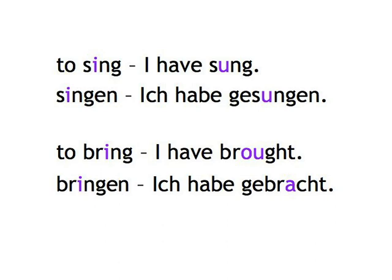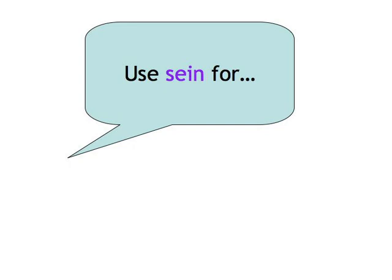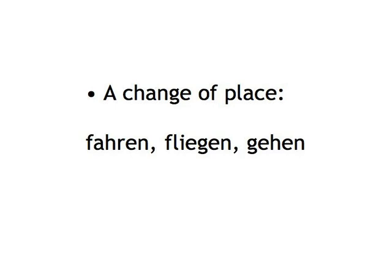As I pointed out initially, the perfect tense in German is normally formed with the auxiliary haben, like in English. So the next issue is when to use the auxiliary verb sein to form the perfect tense. The auxiliary verb sein is mostly and most importantly used with verbs that indicate a change in place, like fahren, fliegen, gehen, etc.